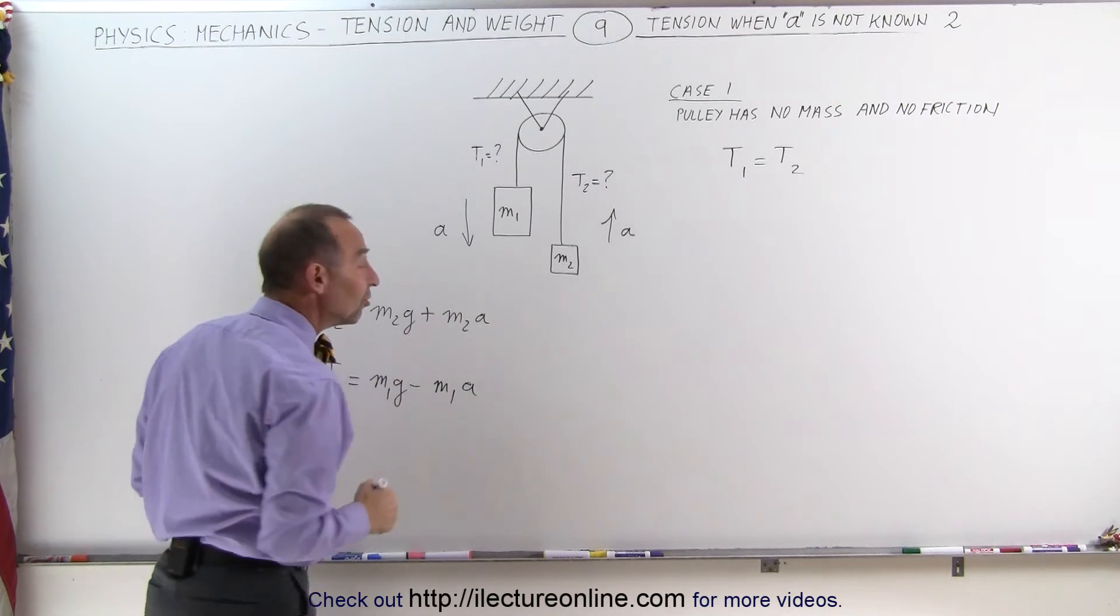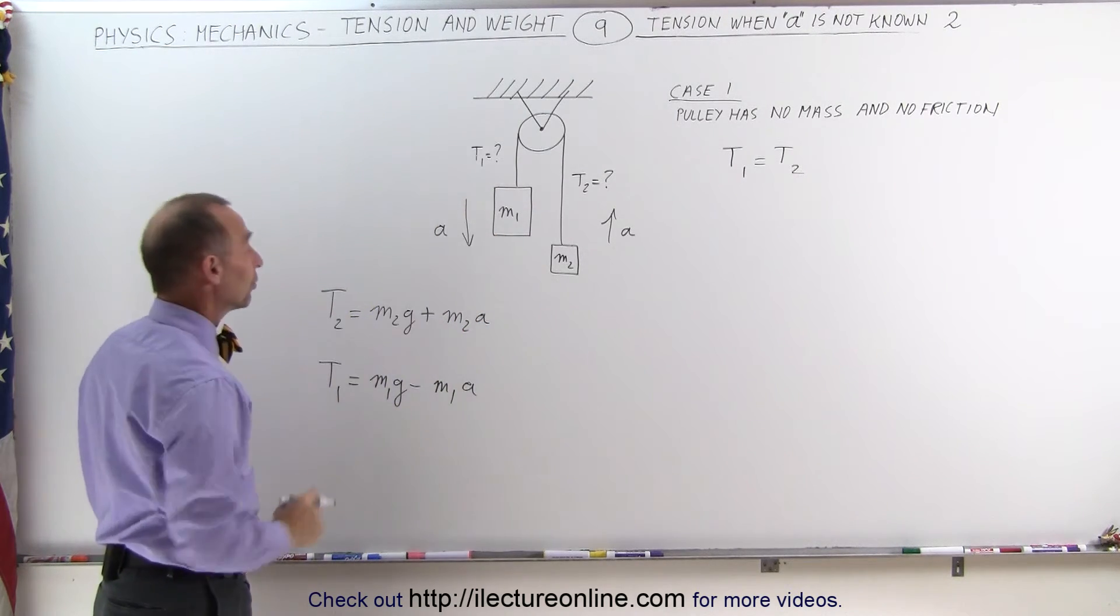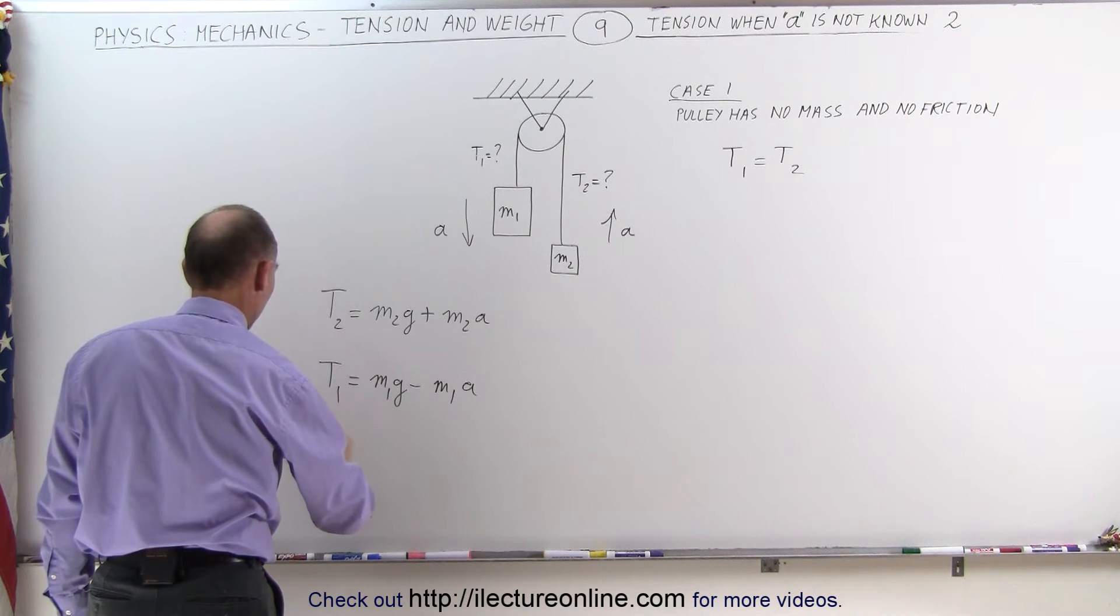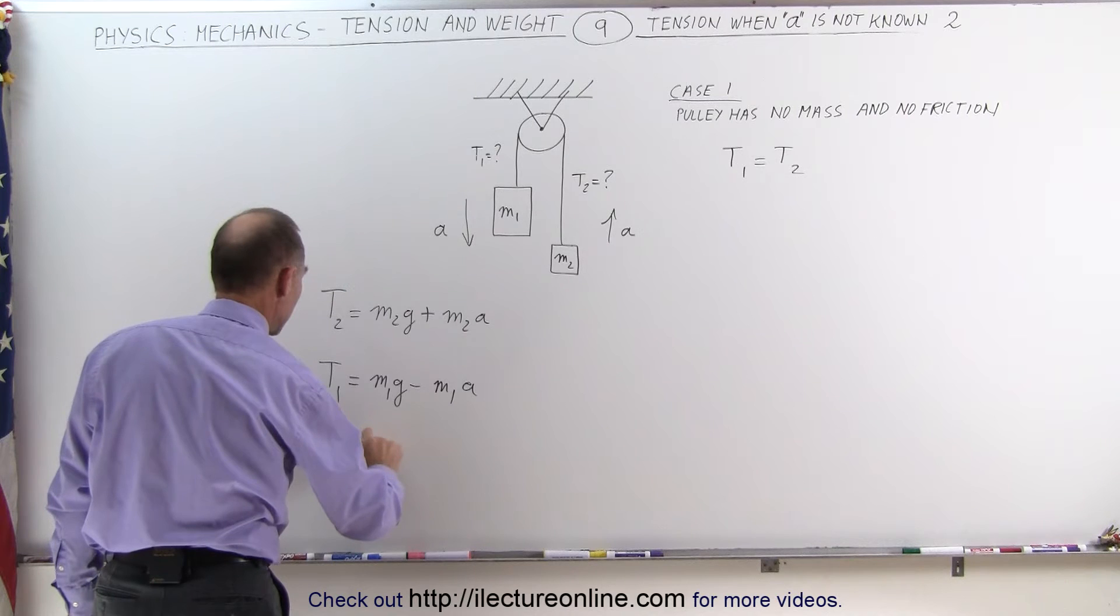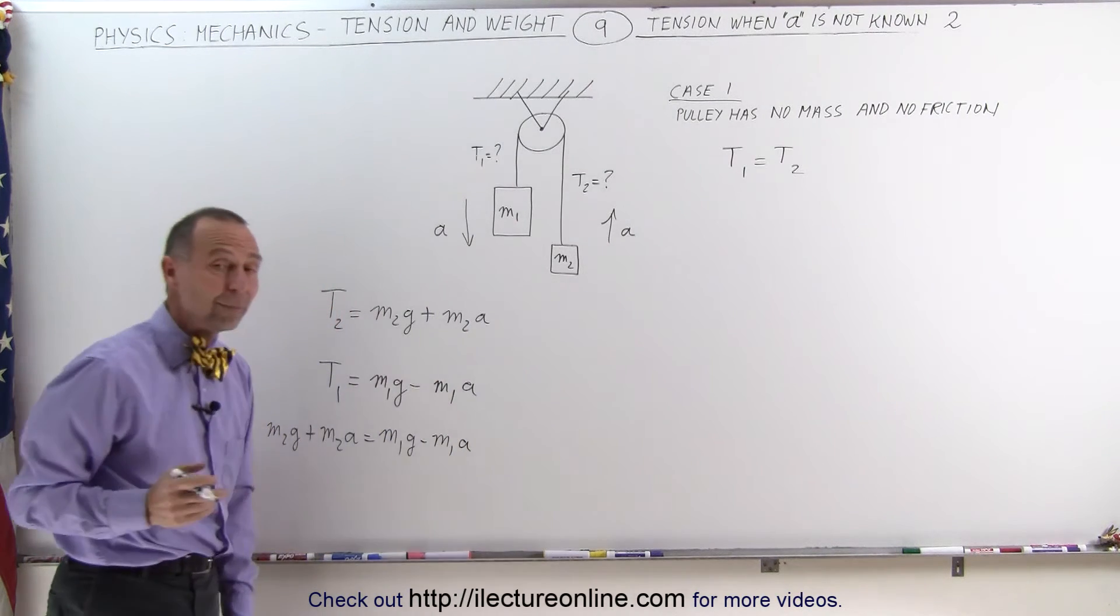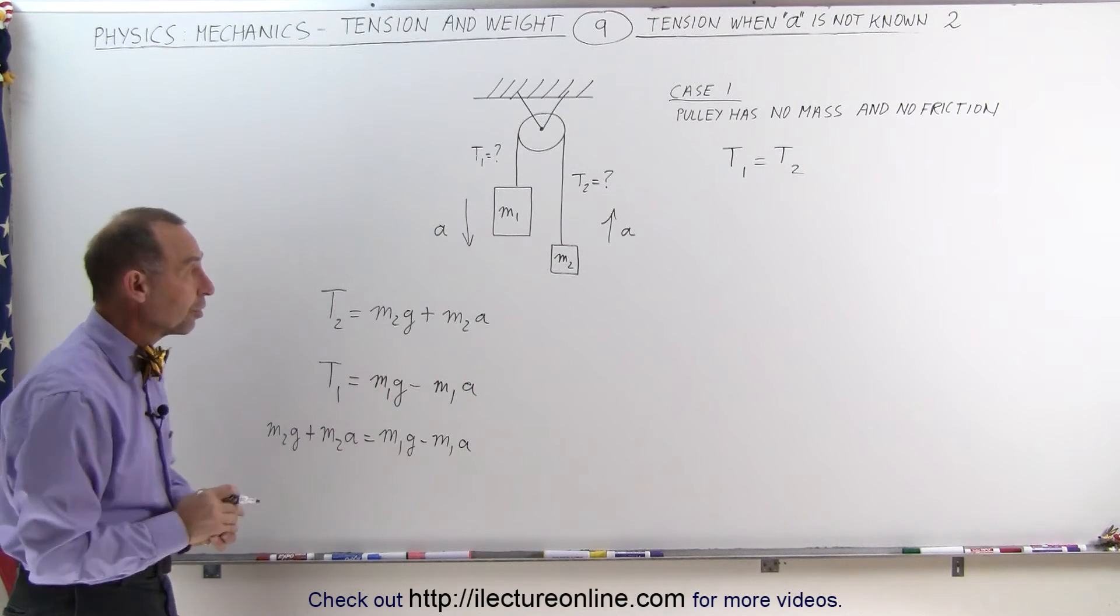In each case the A is the same for both, and realizing of course that T1 equals T2, we can then say that M2G plus M2A equals M1G minus M1A. And if we calculate those independently, you'll find out those are equal to each other.